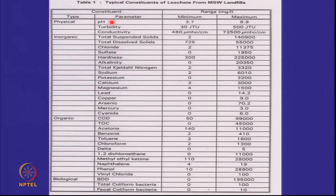To give you an idea of the complexity: if I take a municipal solid waste landfill and look through literature, the parameters to characterize leachate include pH, turbidity, conductivity, suspended solids, dissolved solids, chlorides, sulfates, hardness, alkalinity, nitrogen, sodium, potassium, magnesium, lead, copper, arsenic, mercury, cyanide, inorganic and organic COD, TOC, acetone, benzene, toluene, chloroform and other compounds, BOD, coliform bacteria, and fecal coliform bacteria. There are a large number of parameters.